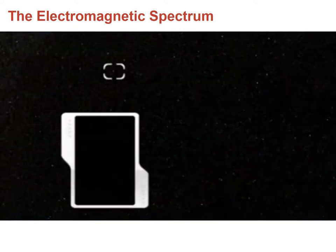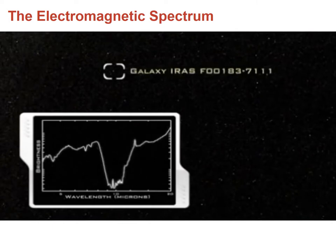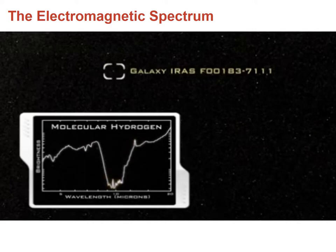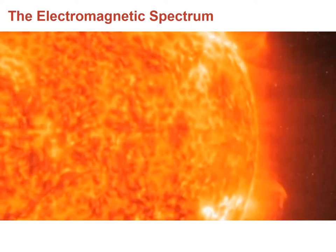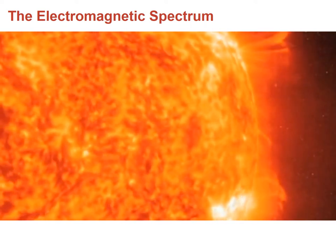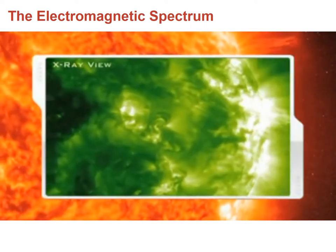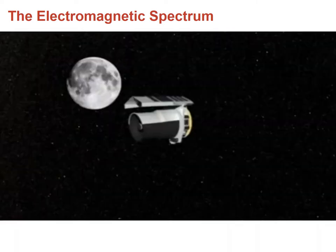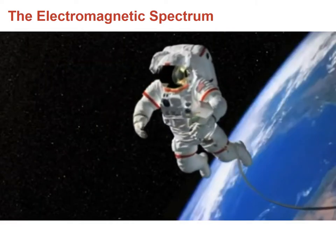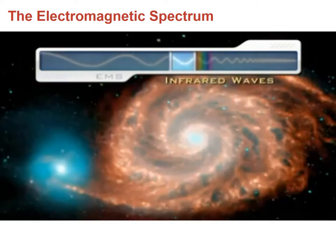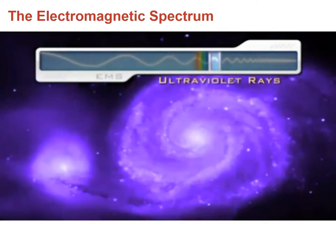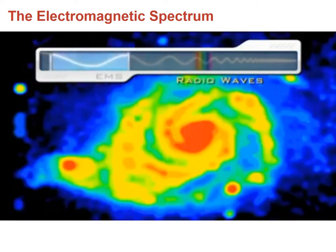NASA's Spitzer Space Telescope observed the presence of water and organic molecules in a galaxy 3.2 billion light-years away. Viewing our sun in multiple wavelengths with the SOHO satellite allows scientists to study sunspots associated with solar flares and eruptions harmful to satellites, astronauts, and communications on Earth. We are constantly learning more about our world and universe by taking advantage of the unique information contained in the different waves across the EM spectrum.